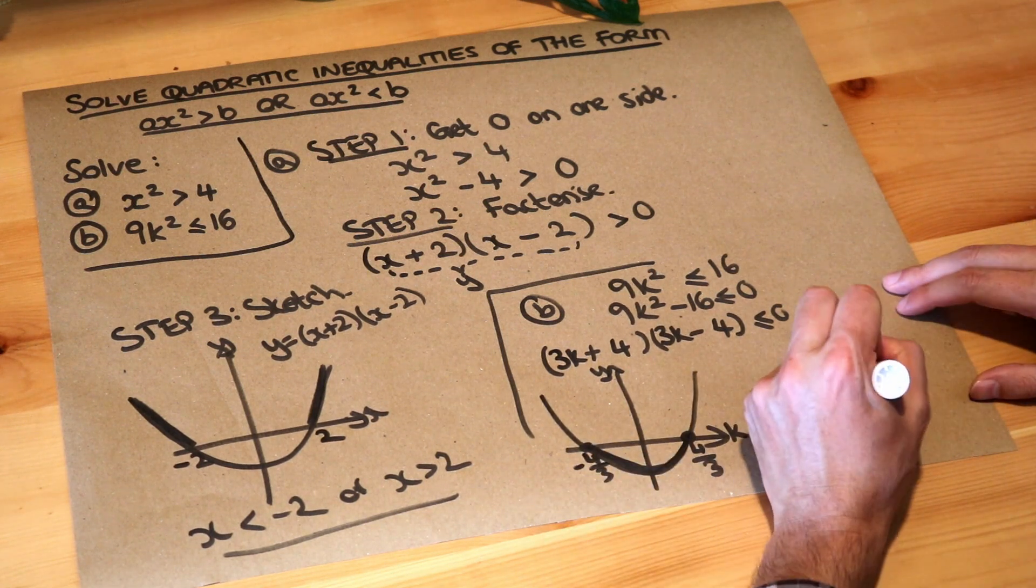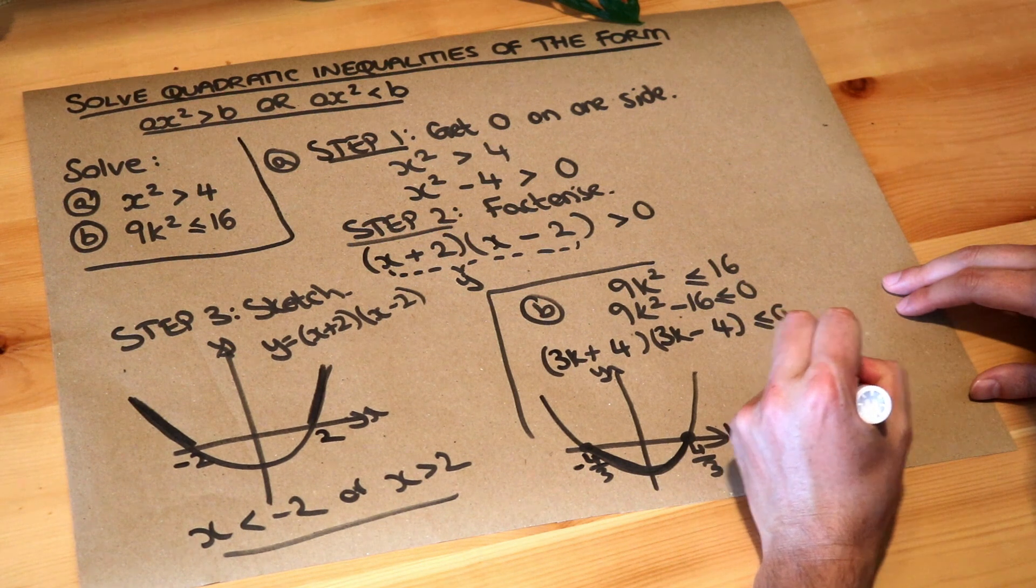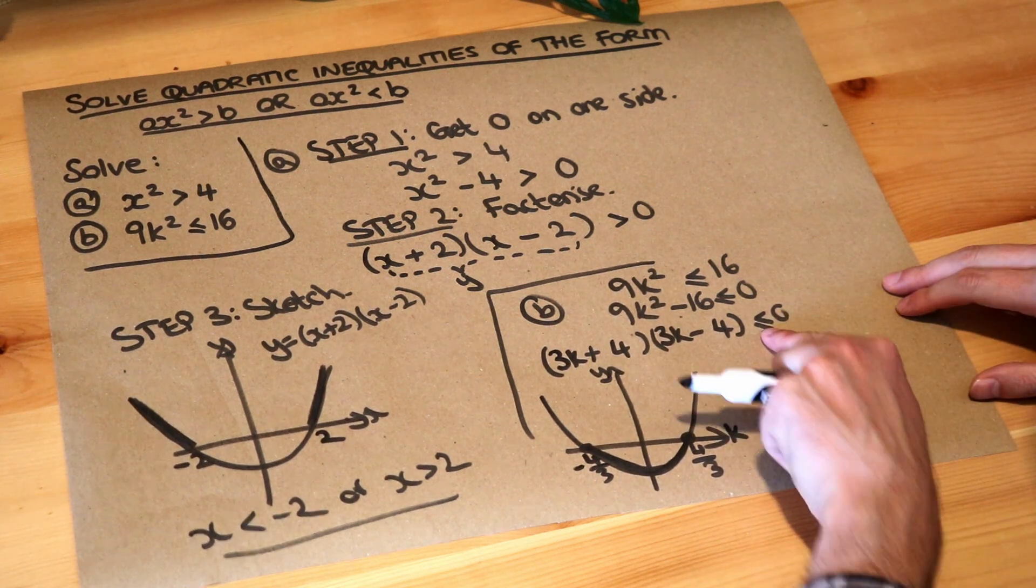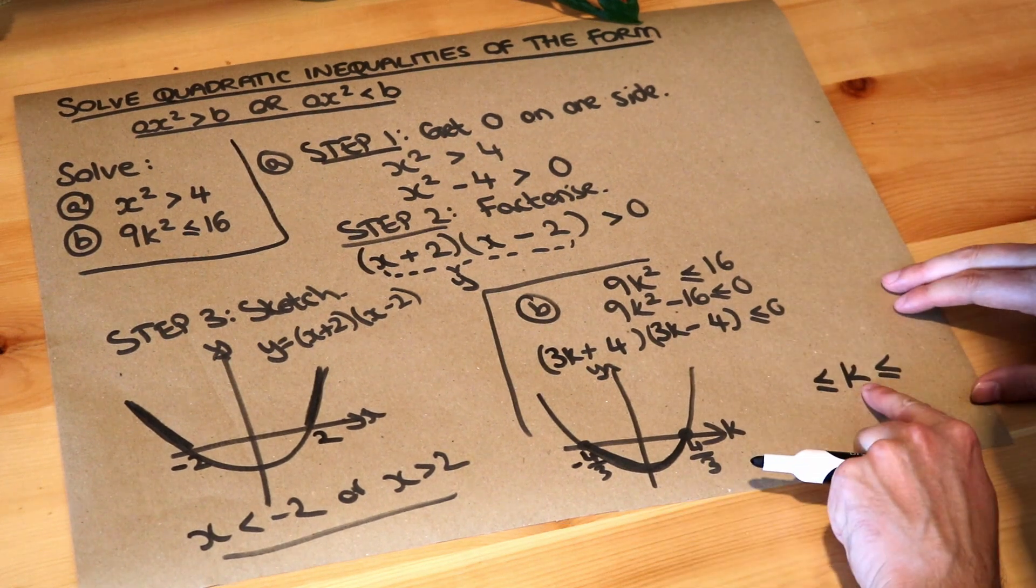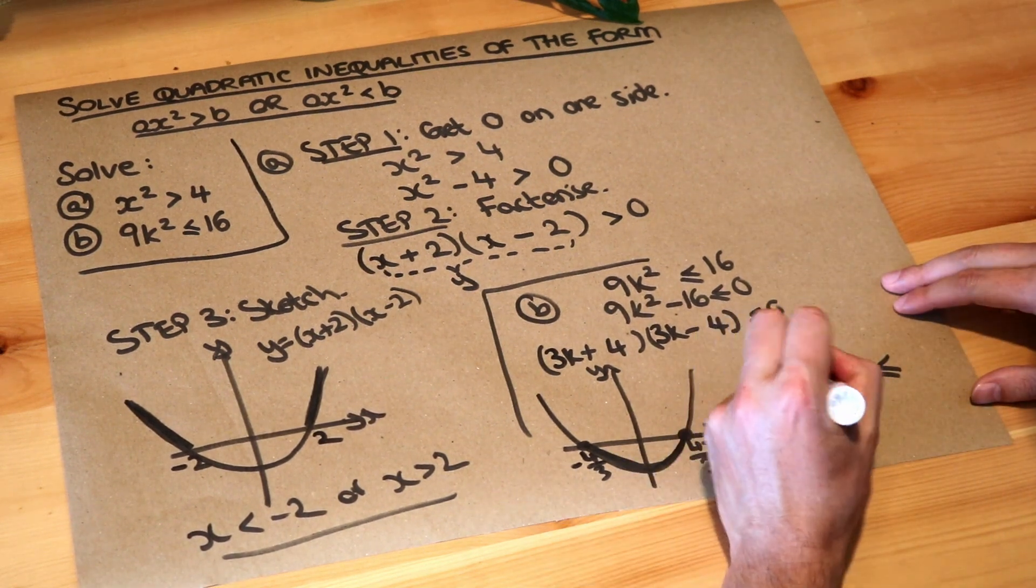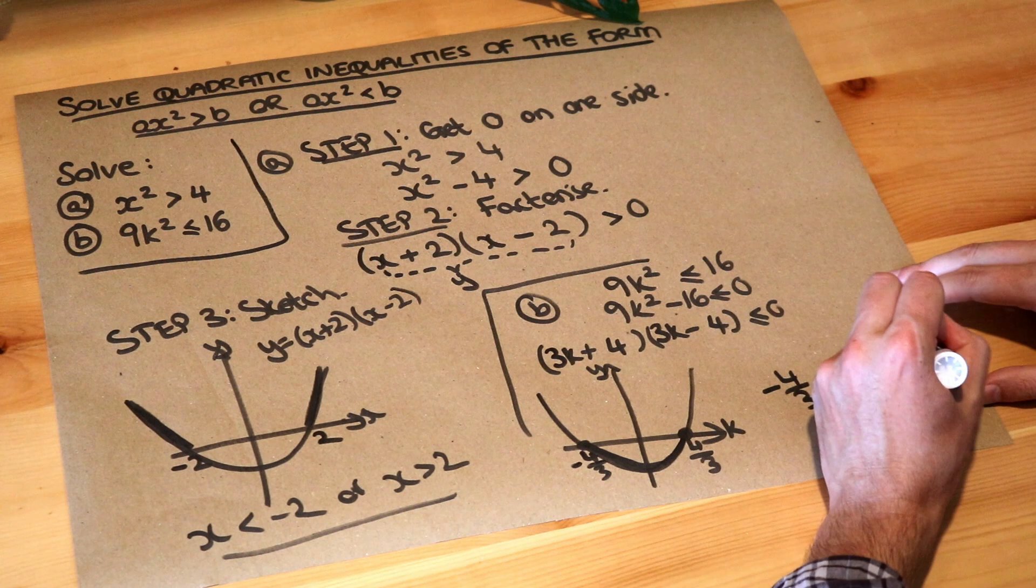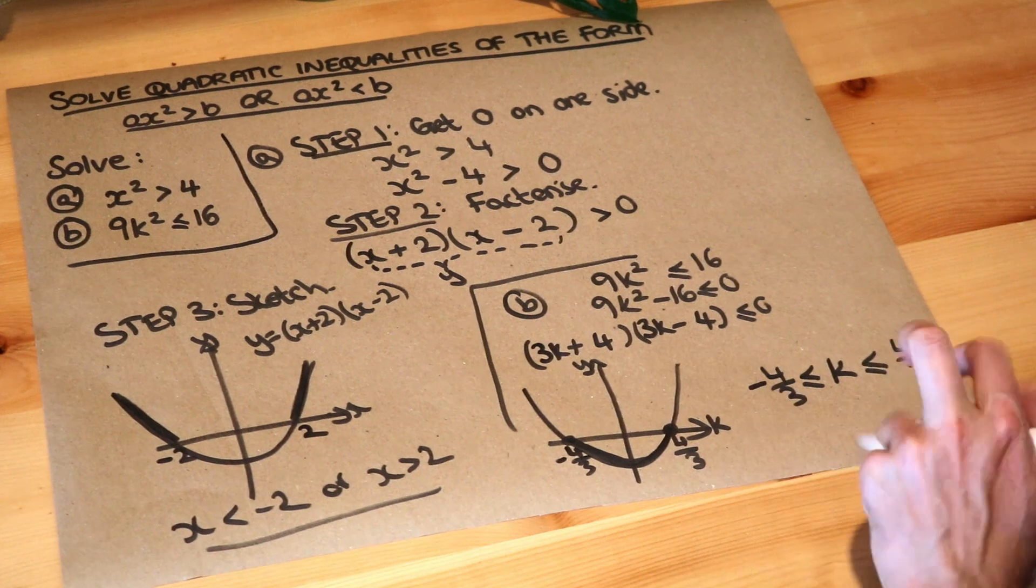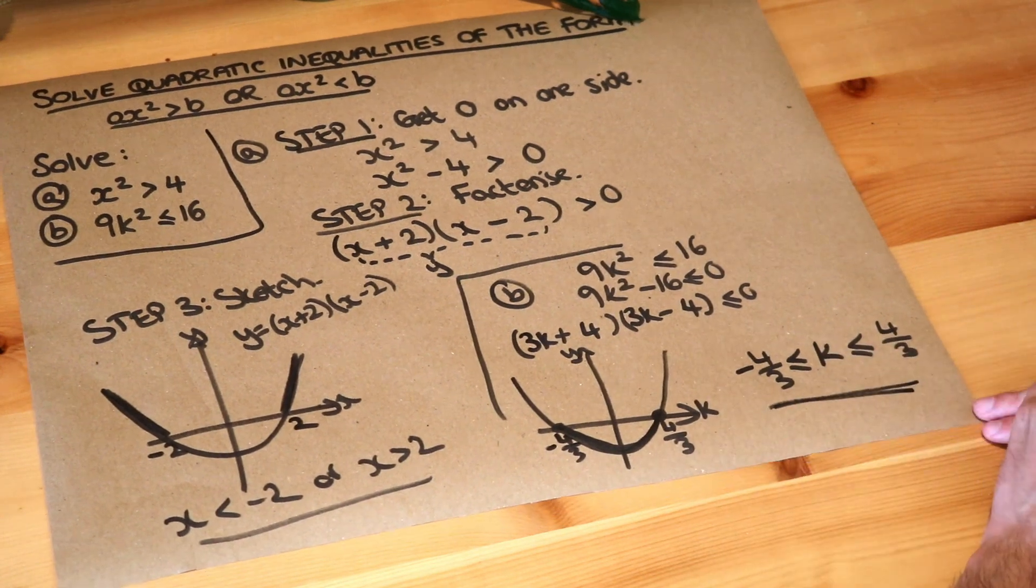So what can we say about between this point and this point? Well, we can see that the k value is between—and notice this has to be less than or equal to, to be consistent with that—it's between minus 4 over 3 and 4 over 3. This is the way we write that k is between two values in this kind of form. And that is the final answer.